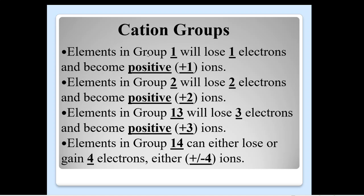The cation groups on your periodic table, the elements in group 1, remember we're talking about now the columns. Those are the numbers at the top. In group 1, we'll lose one electron, and they become positive 1. In group 2, they will lose two electrons and become a positive 2. Group 13, they will lose three electrons. You see the pattern here. And they will become positive 3. And in group 14, they can either lose or gain four electrons. So they will either be a positive or a negative 4.